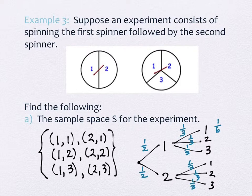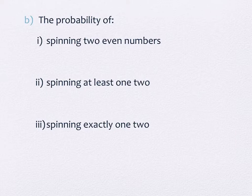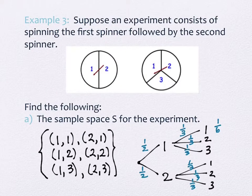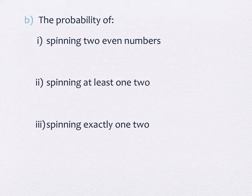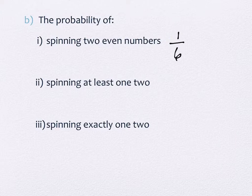Let's look at the questions that are asked as a result now. We want to find the probabilities of spinning two even numbers. So looking over here, how many places do you see two even numbers on there? Just one. Two, two. So that is a 1 out of 6 chance of spinning two even numbers.